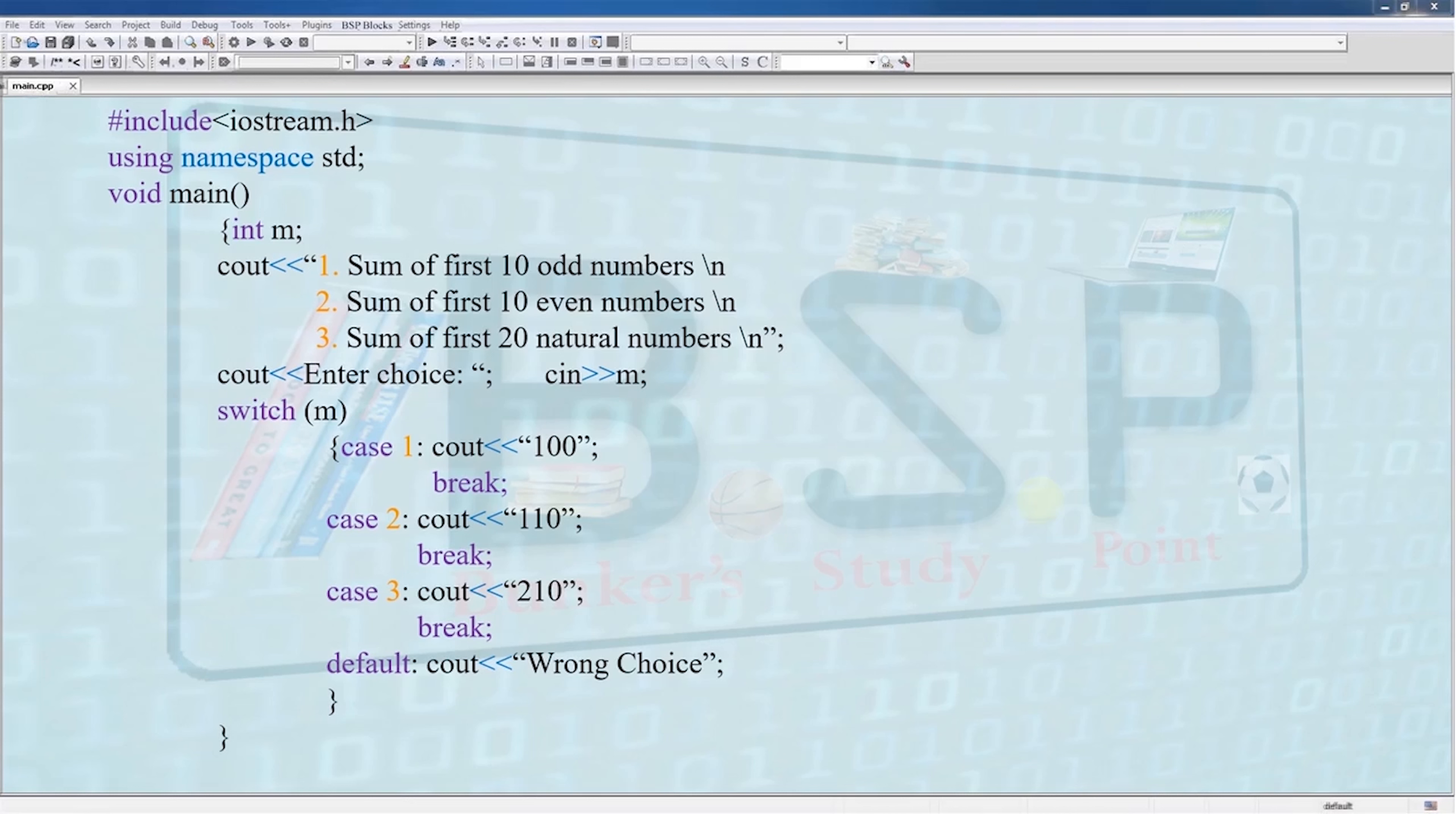Then we have our main concern of this video: switch. Inside switch parenthesis we have the value m. Whatever value m possesses, it will be compared against the case values. Then we have case 1 and a colon, then cout 100, that is the sum of first 10 odd numbers, and then a break. In case 2 we have cout 110 then a break. Similarly in case 3 we have cout 210 and a break.